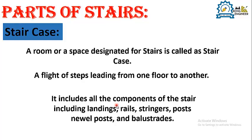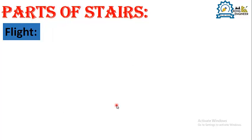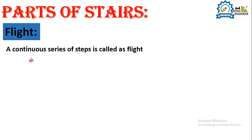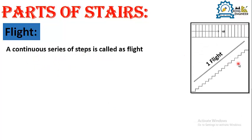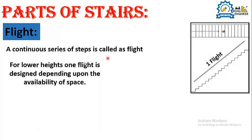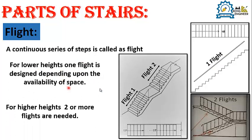The first component is flight. What is a flight? A continuous series of steps is called a flight. For lower heights, one flight is designed depending upon the availability of space. The same staircase can be designed in two flights — a first series of steps called flight one, and another series of steps called flight two. The horizontal surface between these two flights is called a landing, which we will discuss in the upcoming slide.